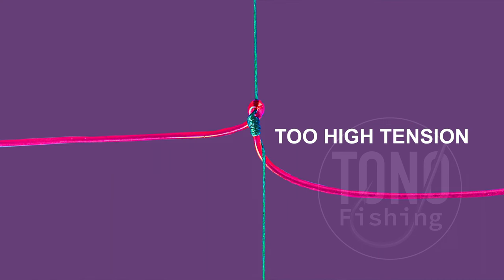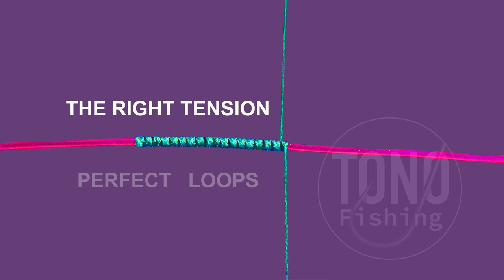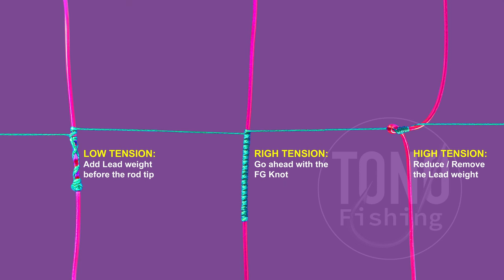The FG knot key is about how much tension to apply to the braid line. The question is, which one is the right tension? If the tension is too low, the knot won't hold, and if it's too high, you won't be able to do parallel braid twists. We need to learn to find the sweet spot.